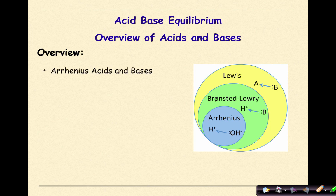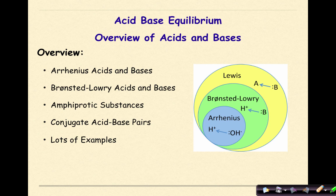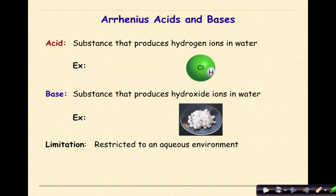Specifically, we're going to look at Arrhenius acids and bases, Bronsted-Lowry acids and bases, amphiprotic substances, conjugate acid-base pairs, and a lot of examples of conjugate acid-base pairs.